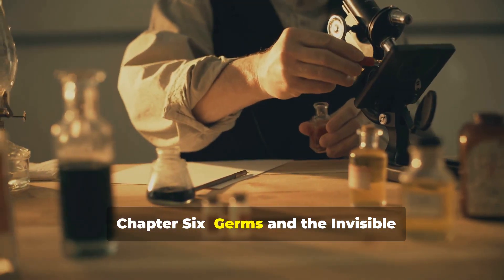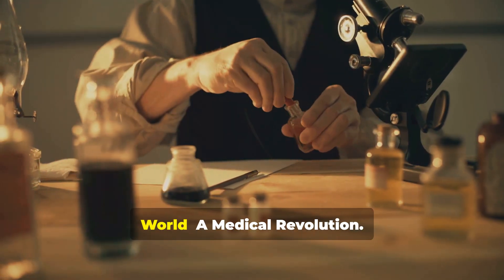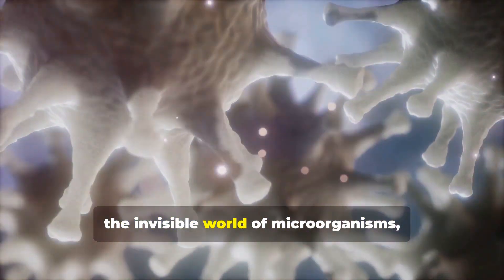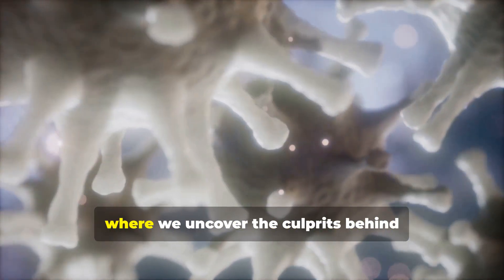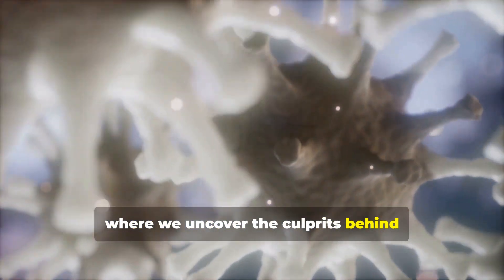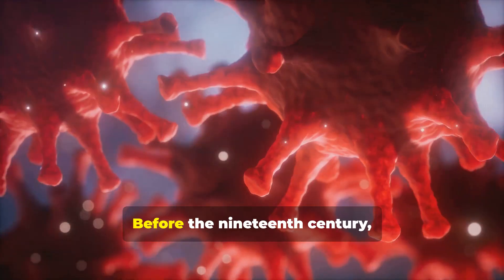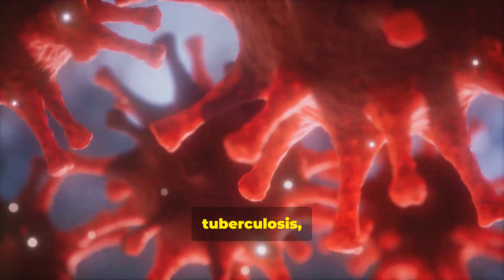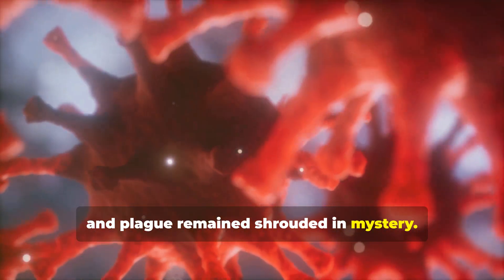Chapter six, germs and the invisible world, a medical revolution. Our next stop takes us on a journey into the invisible world of microorganisms, where we uncover the culprits behind infectious diseases. Before the 19th century, the causes of diseases like cholera, tuberculosis and plague remained shrouded in mystery.